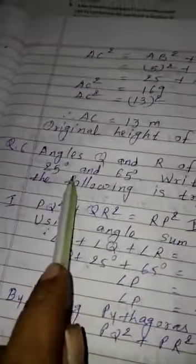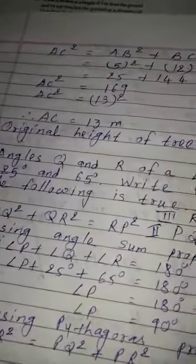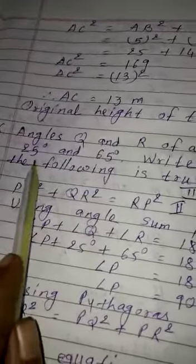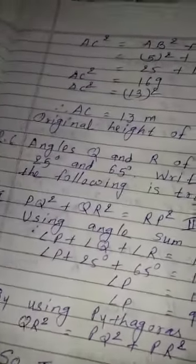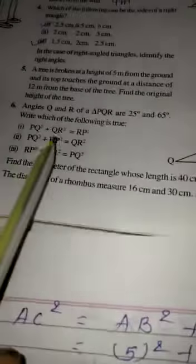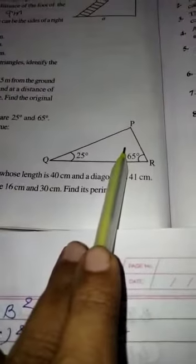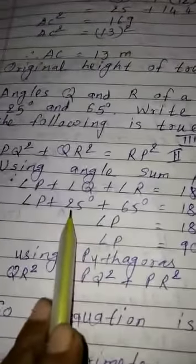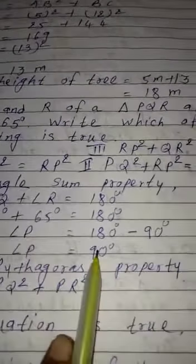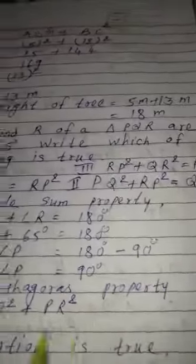Now, come on to 6th number. Angle Q and R of a triangle PQR are at 25 degree and 65 degree. Which of the following is true? Actually, three equations are given and triangle is given. Now, we know angle sum property. That angle P plus angle Q plus angle R is equal to 180 degree. Now, two angles measurement is given.